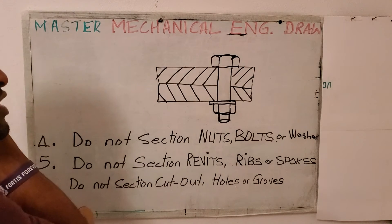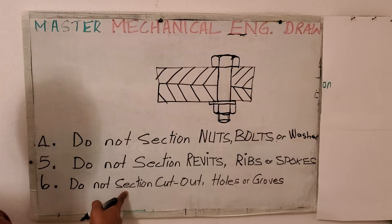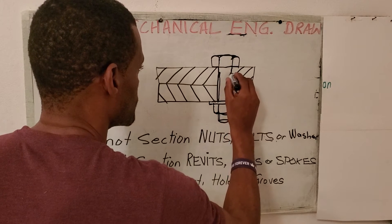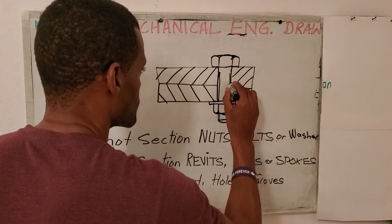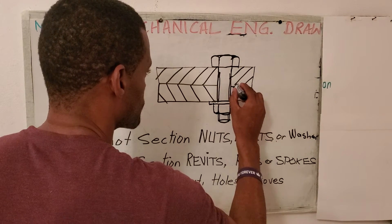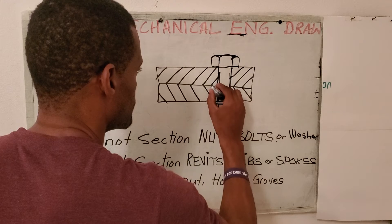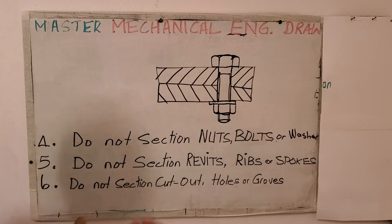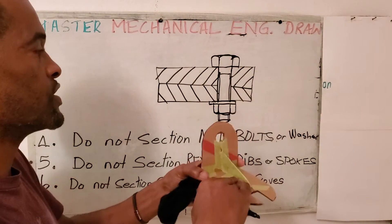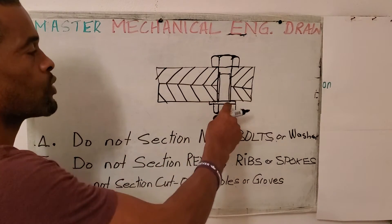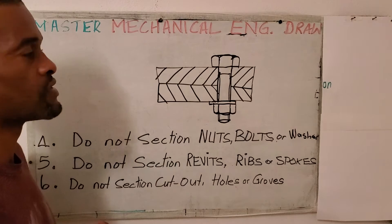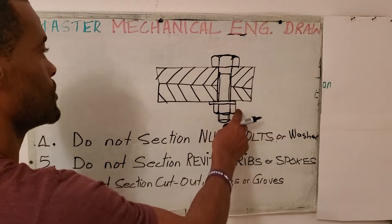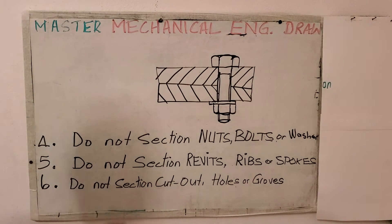There must be hatching in different directions. And additionally, you must also section the thread — threads must be sectioned as well. So the hatching needs to extend into the thread. If it's two separate pieces of material being fastened by the bolt, we need to section them in opposite directions. Do not section nuts, washers, and bolts.